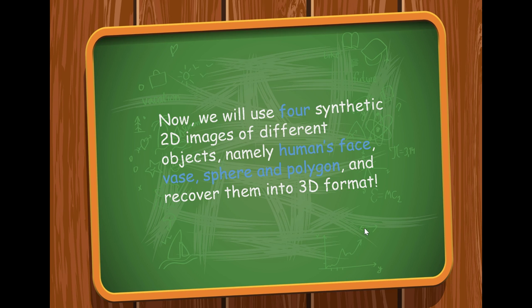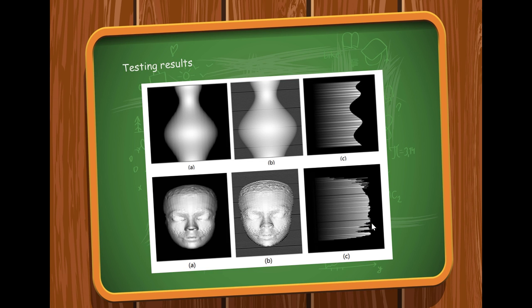To test the correctness of this algorithm, I selected four synthetic two-dimensional images, namely vase, face, sphere, and halogen. Here are the testing results of the four objects. A is the original two-dimensional image. B is the front evaluation view of the three-dimensional image. And C is the lateral view of the three-dimensional image.